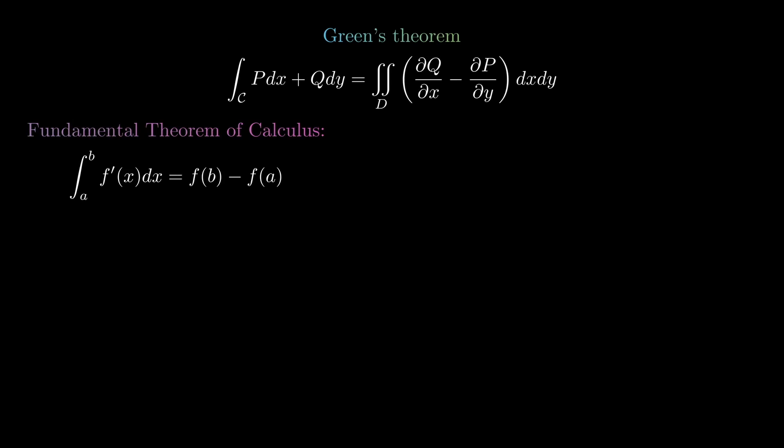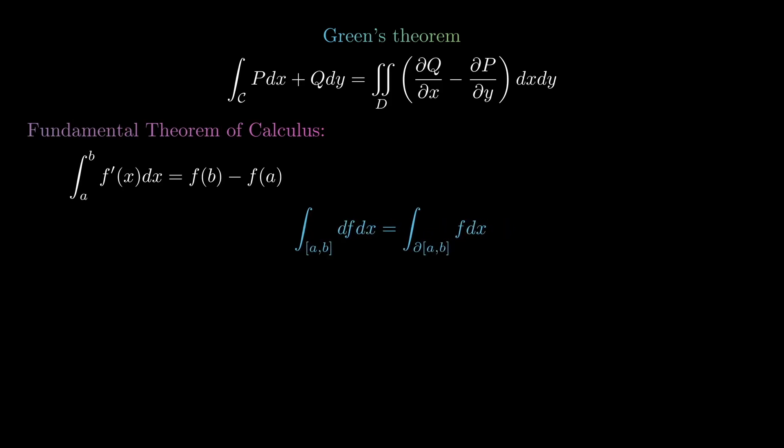To get further insight, we'll rewrite the integral from a to b of f′(x) dx as the integral over the closed interval [a, b] of df. We can also write f′(x) as df, and we can write {a, b} as the boundary of the closed interval [a, b]. To denote the boundary of a set, we use the partial symbol ∂, so the set containing only a and b is denoted ∂[a, b].